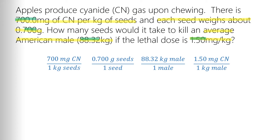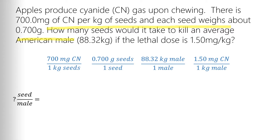Our next step is to determine how to put these units together into a mathematical process. To do that, the first question we have to ask ourselves is: what's the answer supposed to look like? We need to look for the interrogative statement — the who, what, when, where, how type statement in the problem. We got one right here: how many seeds would it take to kill an average American male? That tells us our answer is going to be in seeds per male.